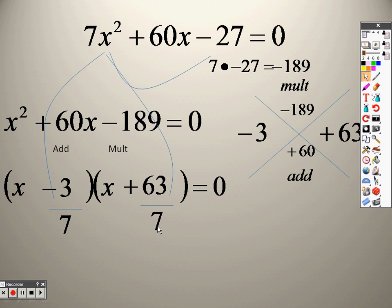When you take a look here at these, I can divide a 7 out of both those, so I end up getting x minus 3 7ths, and 63 divided by 7 is a positive 9.